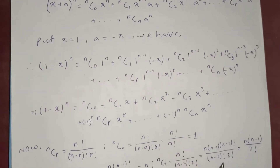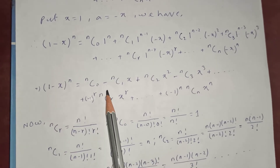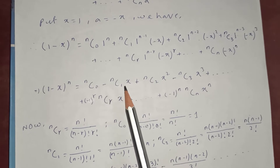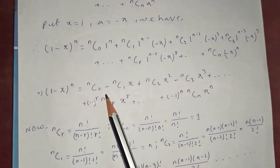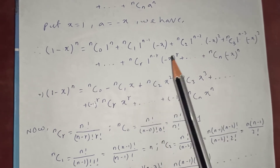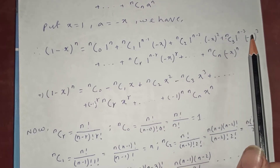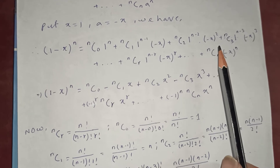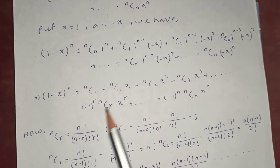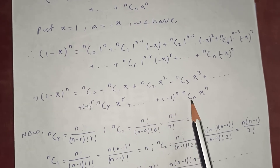We know that 1 to any power is just 1. Therefore (1 minus x) to the power n is: nC0 minus nC1 x, plus nC2 x squared — because negative x squared is positive — minus nC3 x cubed, plus so on, plus (minus 1) to the r times nCr times x to the r, plus so on, plus (minus 1) to the n times nCn times x to the n.